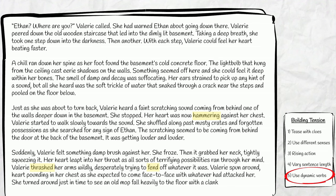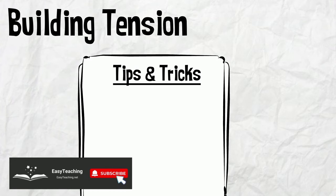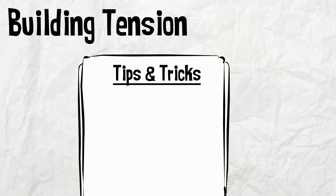Now it's almost your turn to practice these tension-building techniques. But before you do, here are a couple of tips and tricks. Use darkness — darkness can often make a scene more tense, and it also forces us to be more descriptive with senses other than sight.